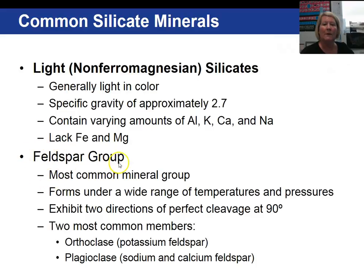Let's take a look at this feldspar group. It forms under a variety of temperatures and pressures. It has two directions of cleavage at 90 degrees to each other, and there are two common members: the potassium feldspar, in which orthoclase is the most common, and plagioclase feldspar, which are sodium and calcium rich rather than potassium rich.